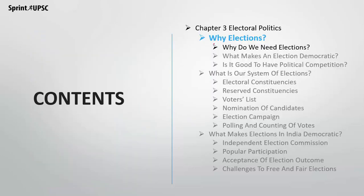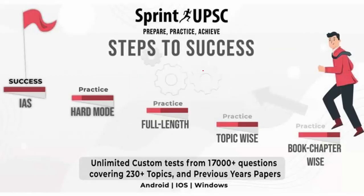That's it for this session. We have understood what makes an election democratic and whether it is good to have a political competition. If you like this video, subscribe to the YouTube channel for more videos and updates. Download the Sprint UPSC app to practice book, chapter, and topic wise. Remember, just reading books or watching videos won't help — you need to practice thoroughly to identify mistakes and improve your performance.